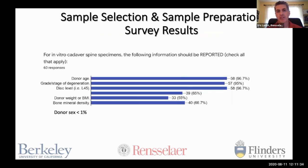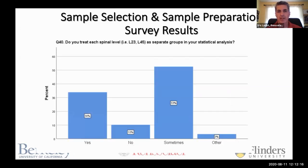We asked respondents what information should be reported for in vitro cadaver spine specimens. Most people felt that donor age, grade of degeneration, and disc level were important. Fewer people thought donor weight and height or bone mineral density were important to report. Interestingly, while the literature shows different properties depending on sex, fewer than 1% of respondents indicated that donor sex was a variable they thought was important to report. When asked whether they treat each spinal level — L2, L3, L4, L5 — as separate groups in statistical analysis, only about one-third of respondents said yes. These are things where the literature suggests very important factors, but current practices are less clear.